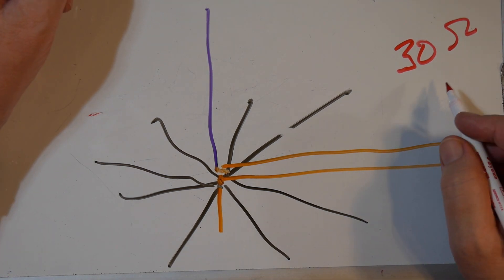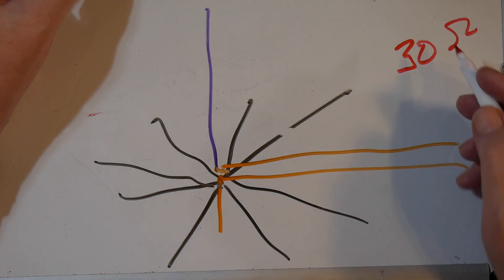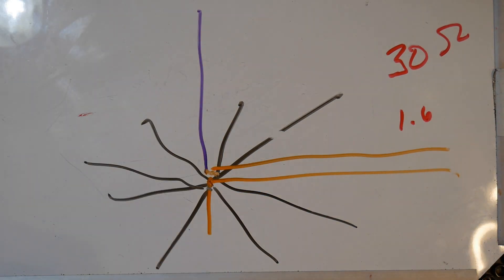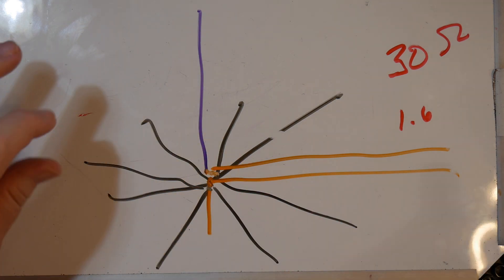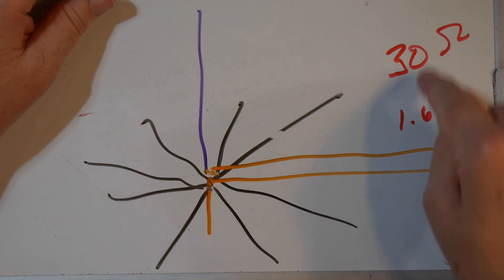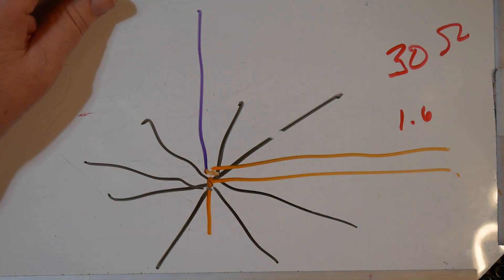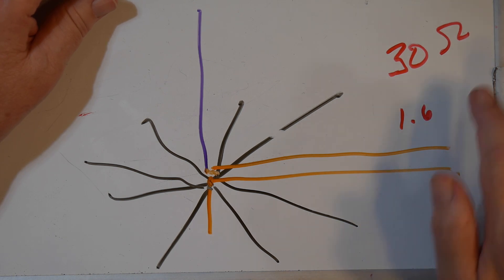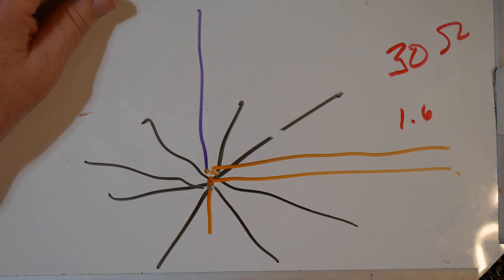30 ohms. So, if you calculate the SWR at this point, it will be about 1.6. And if you want to get better than that, you're going to have to put in some sort of a anon in here, a transformer type anon to change the impedance. But most people just, it's less than two. So, they just use the antenna tuner in their radio, which works fine.